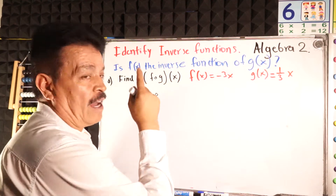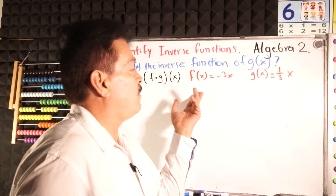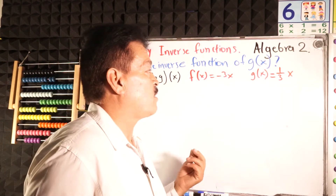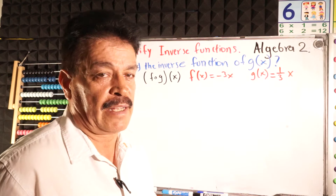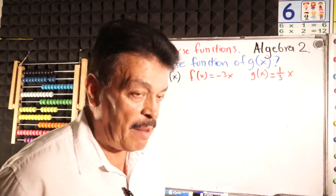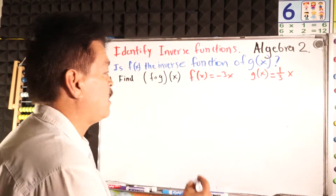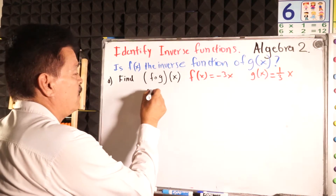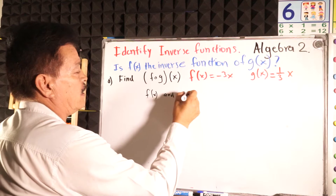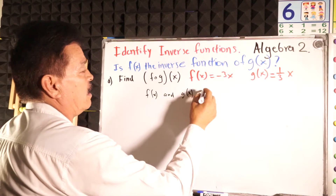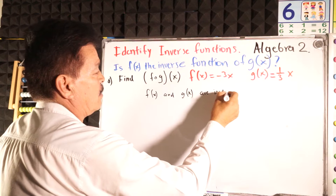So it's f composed with g of x. We have f of x equals negative 3x, and g of x equals one-third x. Remember, f of x and g of x are inverse functions.